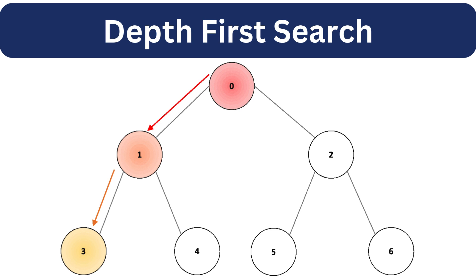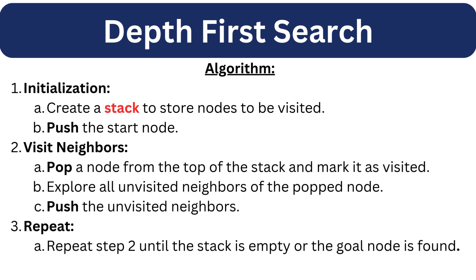Depth-first search takes a different approach than breadth-first search. It explores as far as possible along each branch before backtracking. Imagine it as diving deep into the path until you hit a dead end and retrace your steps to explore other paths. The only difference between the DFS and BFS algorithm is the choice of data structure. In BFS algorithm, we use queue data structure and use enqueue and dequeue operations. In DFS algorithm, we use stack data structure and use push and pop.